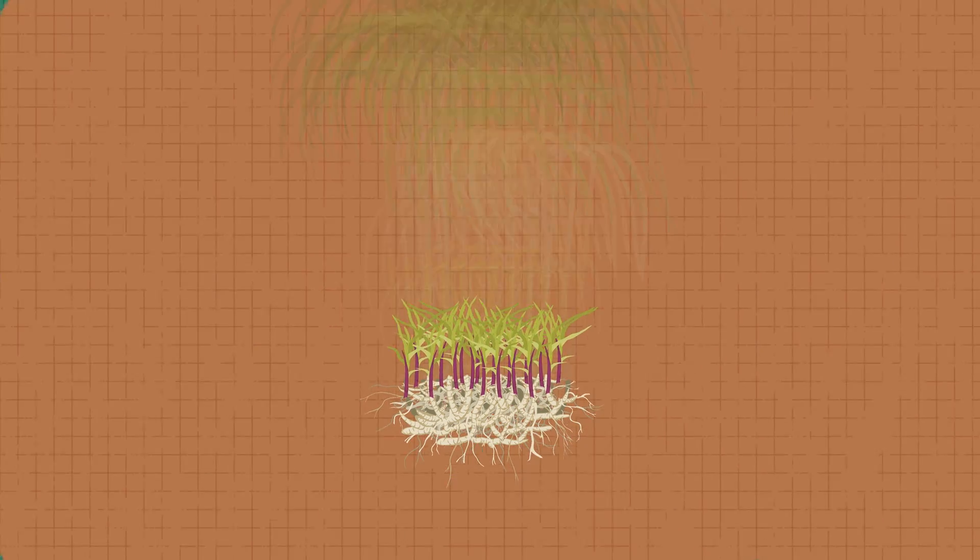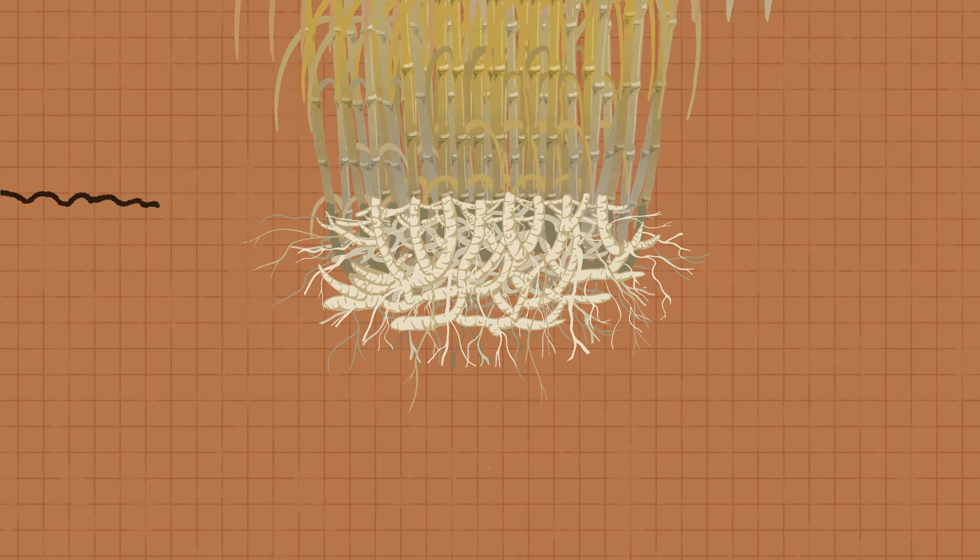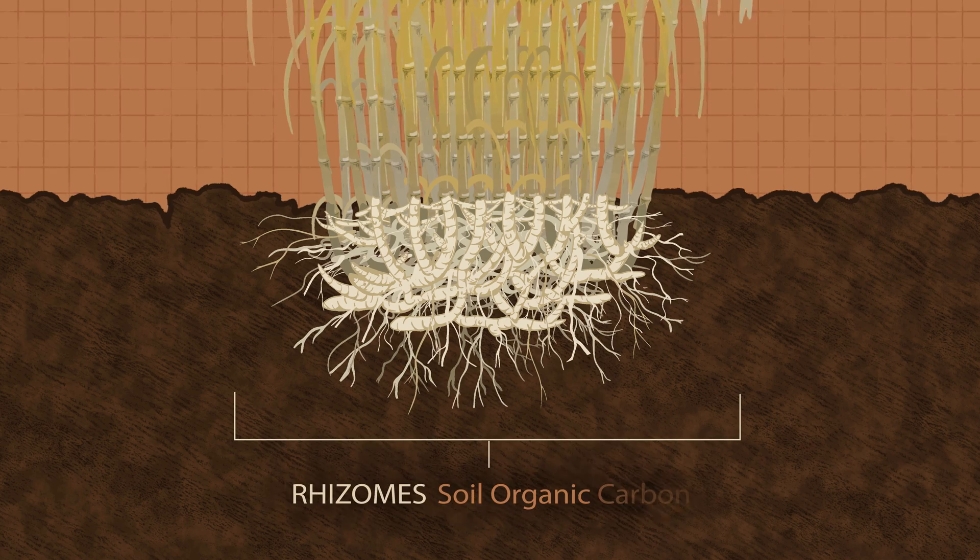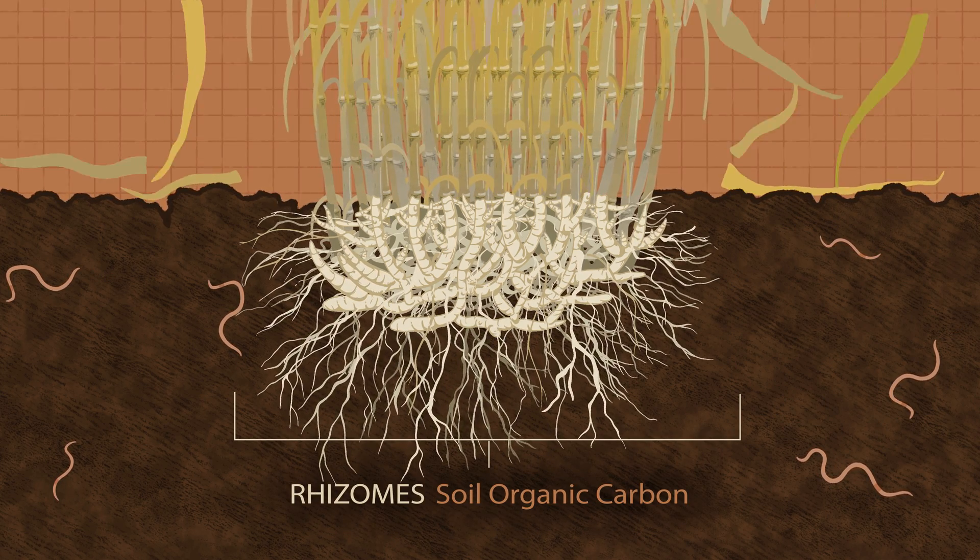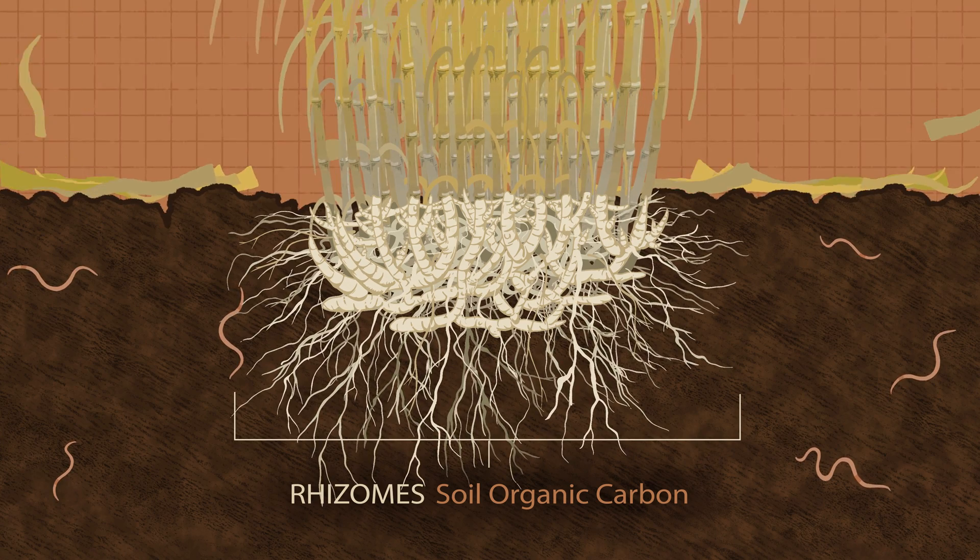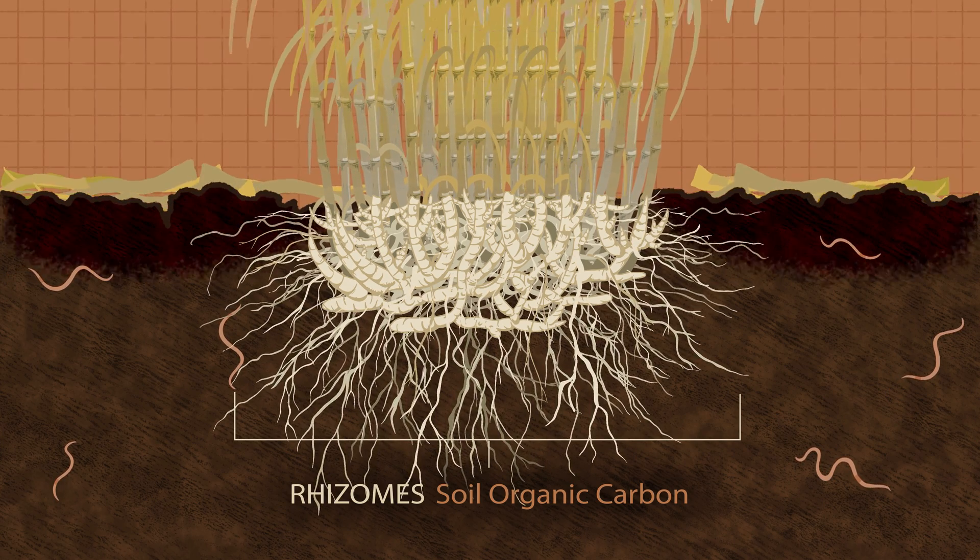The secret to miscanthus' success is in the rhizomes, an underground root network which stores organic carbon in the soil every single year. Being a perennial crop,